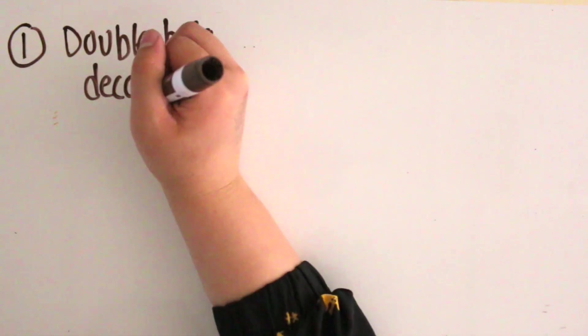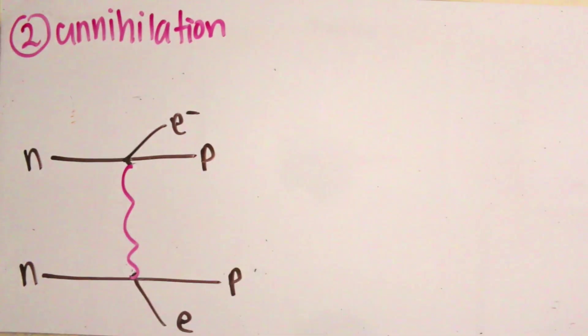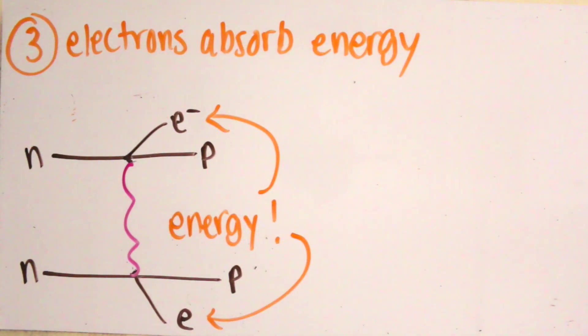Let's review that again. One: double beta decay happens. Two: the neutrinos annihilate into energy. Three: the electrons absorb that energy, so now they have more energy.